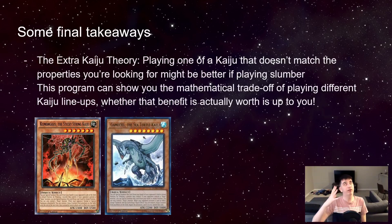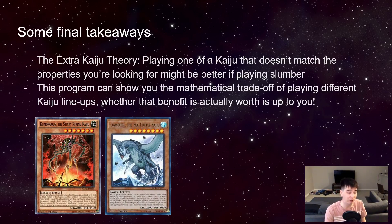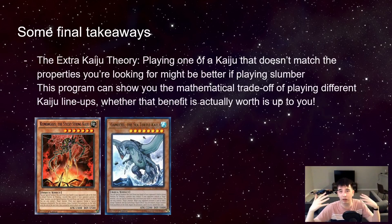Here's the theory: if I'm ever going to summon a Kaiju to my field, my opponent has to have one — almost no one's summoning Kaijus to their own field. So if I activate Slumber with two differently-named Kaijus in my deck, I can always give my opponent the level 7 one. That means I always have at least one level 8 Kaiju, so there's actually no drawback as long as you're not running Trade-In.